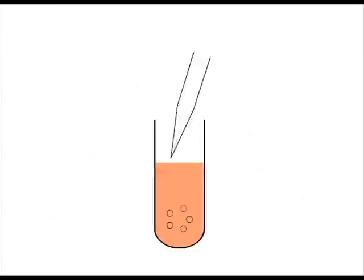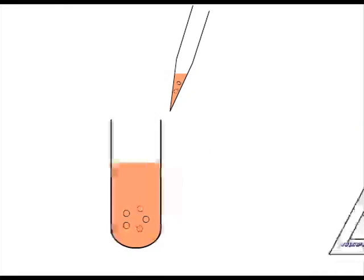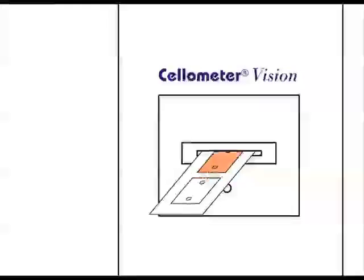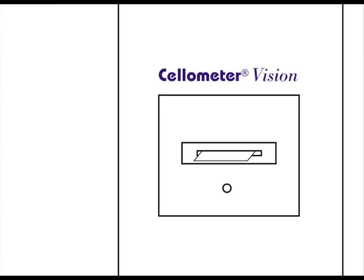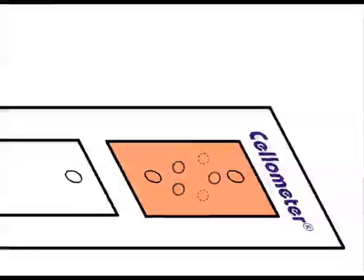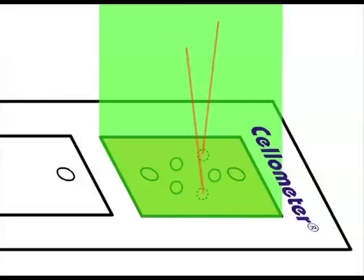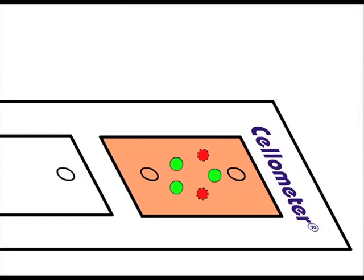To perform a Cellometer AO-EB assay, load stained cells into a counting chamber. Insert the chamber into Cellometer. Cellometer automatically performs cell image acquisition and imaging analysis. Typical assay time is less than 60 seconds.